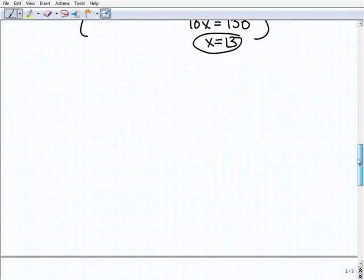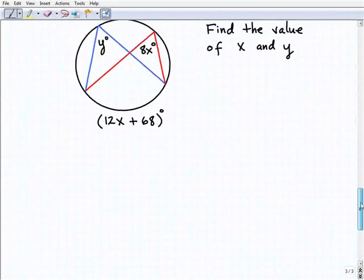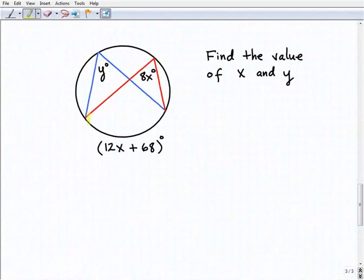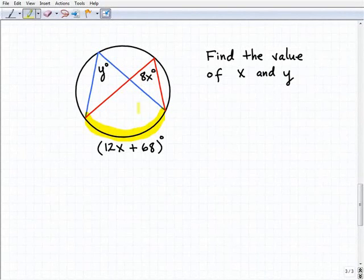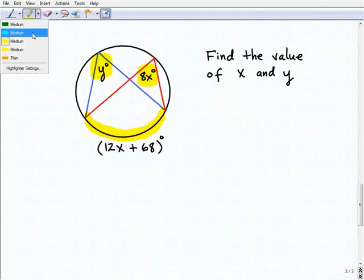Let's take a look at our last problem. Here, we want to find the value of x and y. We have two inscribed angles that intercept the same arc. We had a theorem that says that two inscribed angles that intercept the same arc are equal. So I know that y and 8x, these two inscribed angles are equal. Now to find the value of x and y, I need to figure out how to write an equation out of this situation.